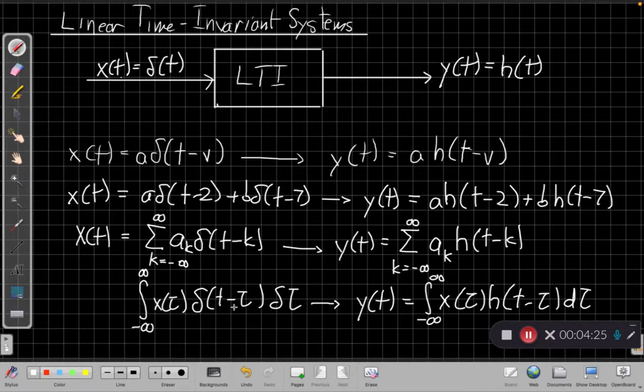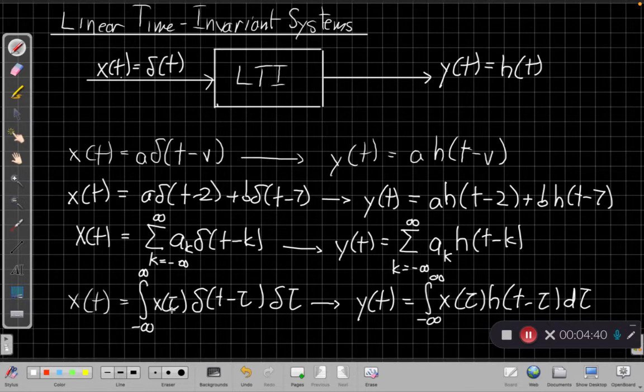The sifting property tells us that this is X of T. For every possible infinite shift tau, I'm putting a little impulse there whose height is X of tau. So I scaled by X of tau to build up my signal. I'm building it up one impulse at a time. It's just there's an infinitely uncountable set of them, but it's the same basic story that I can build this up this way.